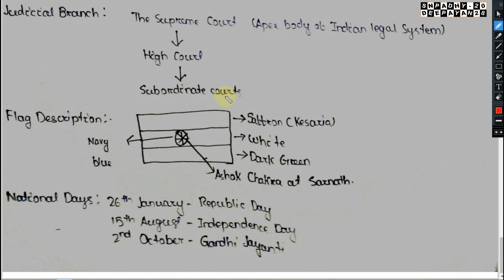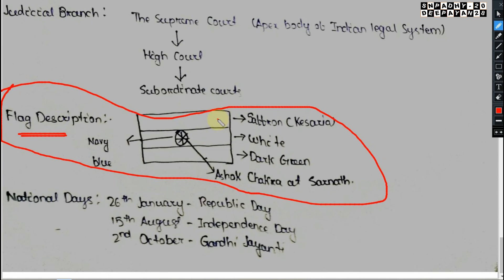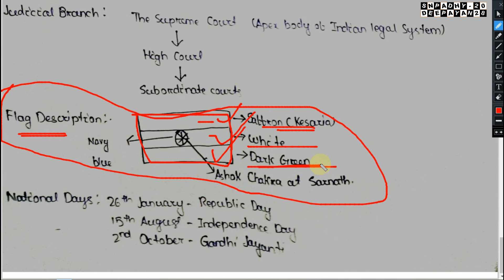Regarding the flag — the Tiranga — the first stripe is saffron (Kesariya), the second is white, and the third is dark green. The Ashoka Chakra is at the center, navy blue in color. It represents the Chakra from Sarnath, symbolizing Emperor Ashoka's governance.